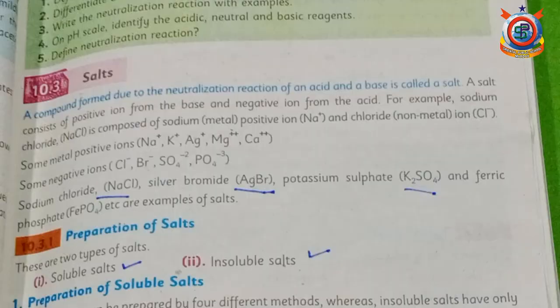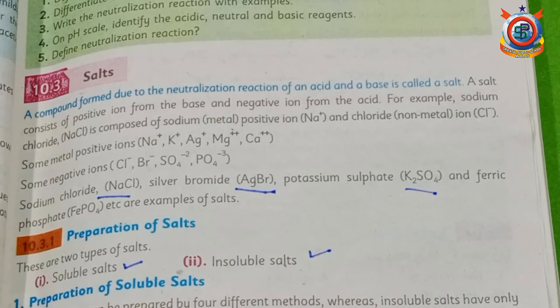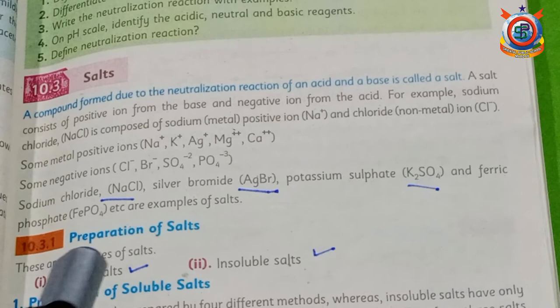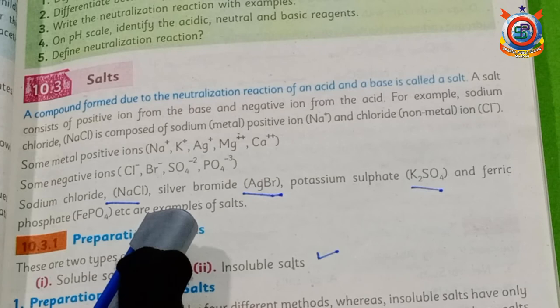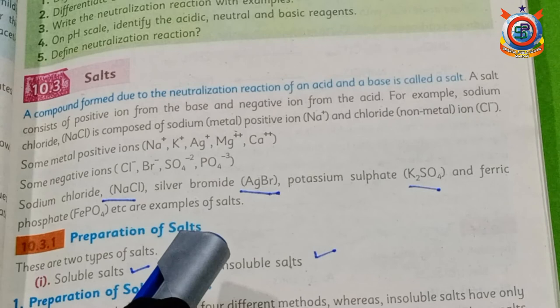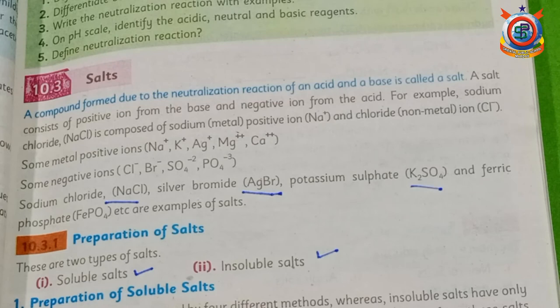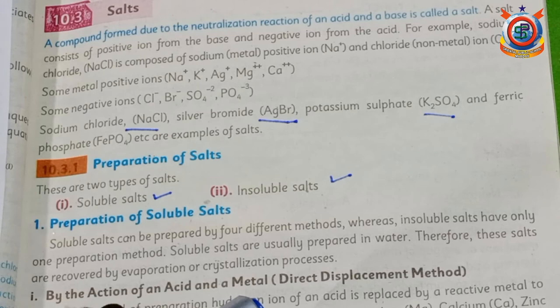To repeat: a salt is a compound which is formed due to the neutralization reaction of an acid and a base. Examples include sodium chloride, potassium sulfate, and ferric sulfate. We have two types of salts: soluble and insoluble. We also discussed other types: acidic salt, basic salt, and neutral salt.